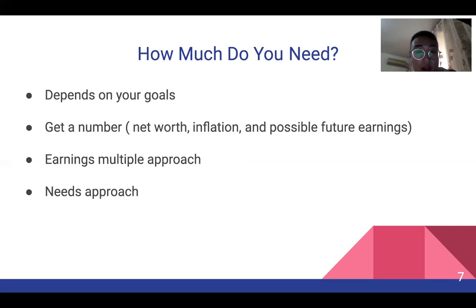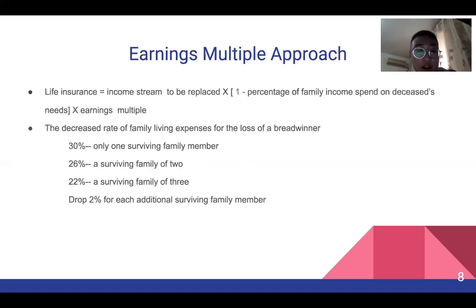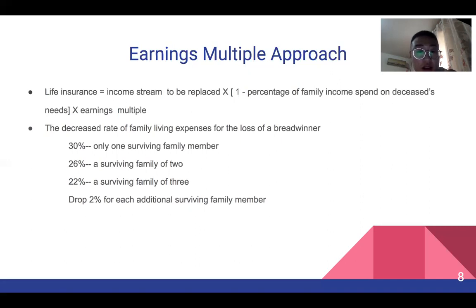There are two basic approaches to help you figure out the number. The first is the Multiple Approach. The formula is: Life Insurance = Income Stream to be Replaced × (1 − Percentage of Family Income Spent on the Deceased's Needs) × Earnings Multiple. The income stream to be replaced is the annual income lost due to the death of the breadwinner. One minus the percentage of family income spent on the deceased's needs equals the family living expenses for the loss of the breadwinner.